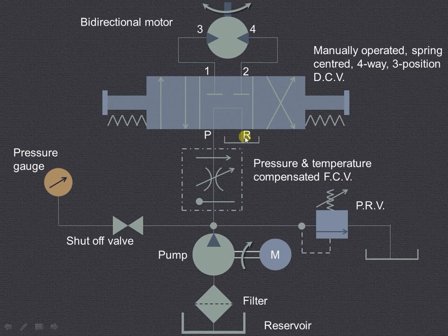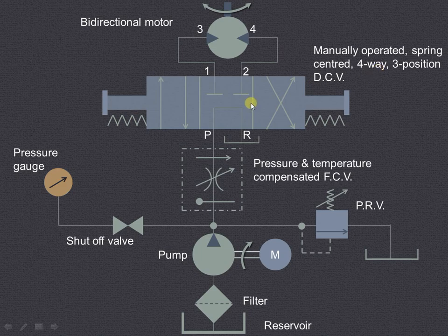The ports are P, R, 1, and 2. These are the four ways and there are three positions: the left envelope mode, the neutral or center position, and the right envelope mode. It is manually operated and spring-centered. So there are four ways — P, R, 1, and 2 — and three positions: left envelope, neutral or center position, and right envelope mode.